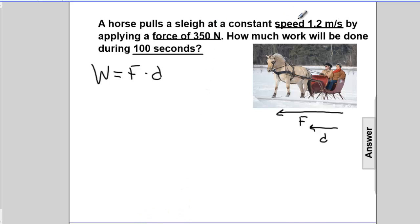We'll come up and label. This is speed, 1.2 meters per second, force, 350 newtons, time. And we're given the force. That's 350 newtons. But we're not given the distance. This is similar to a previous problem. We can solve for the distance using the definition of speed.